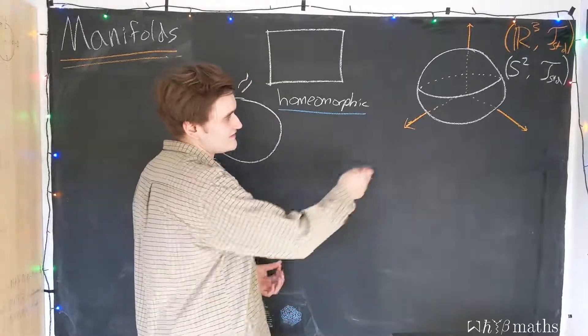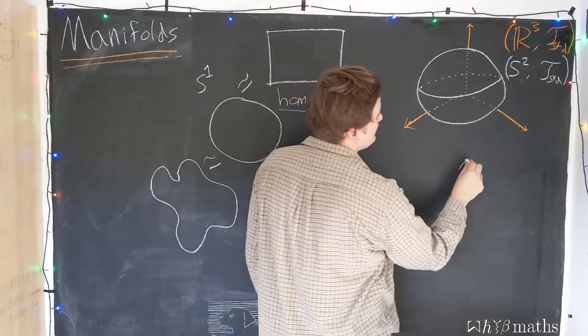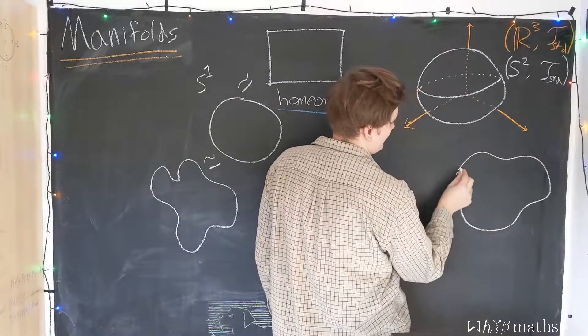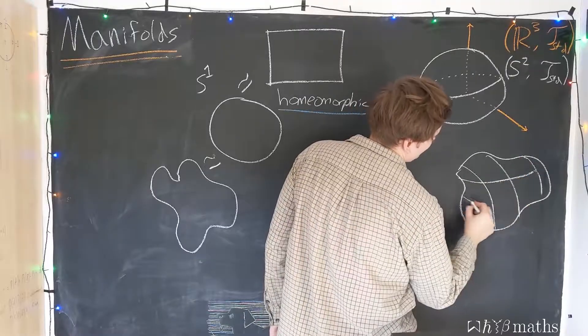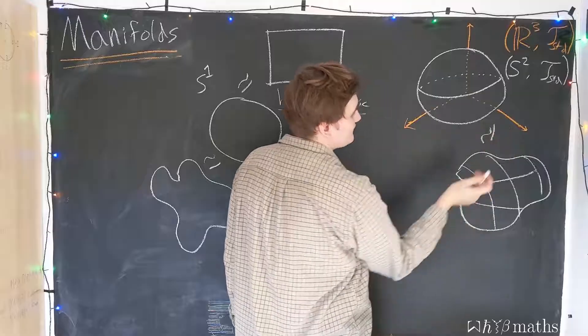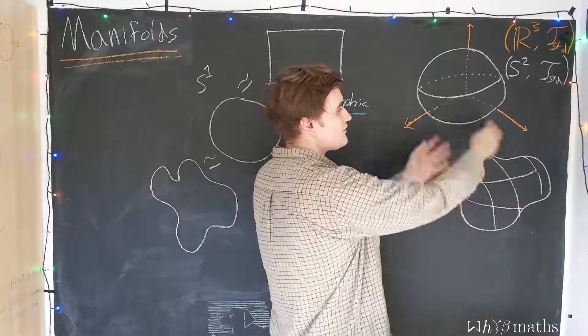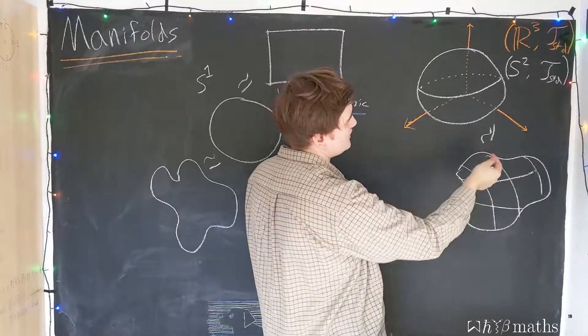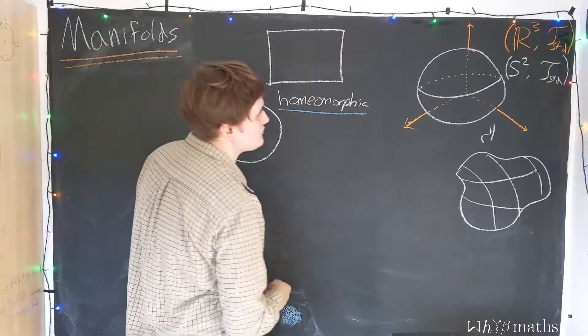So, again, this is the topological space, S2. I've drawn it as the round sphere. I could have drawn some, any kind of three-dimensional blobby object. It would be equivalent to this round sphere, because we know that we can continuously deform one into the other without cutting or tearing. And this is the notion of the two spaces being homeomorphic.